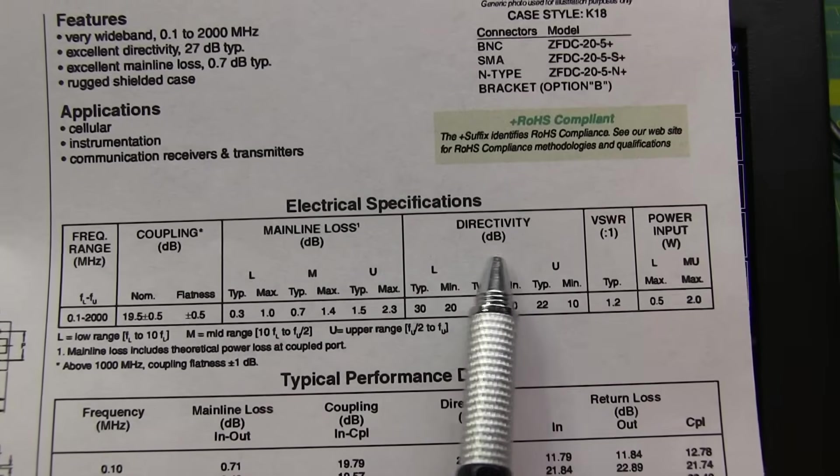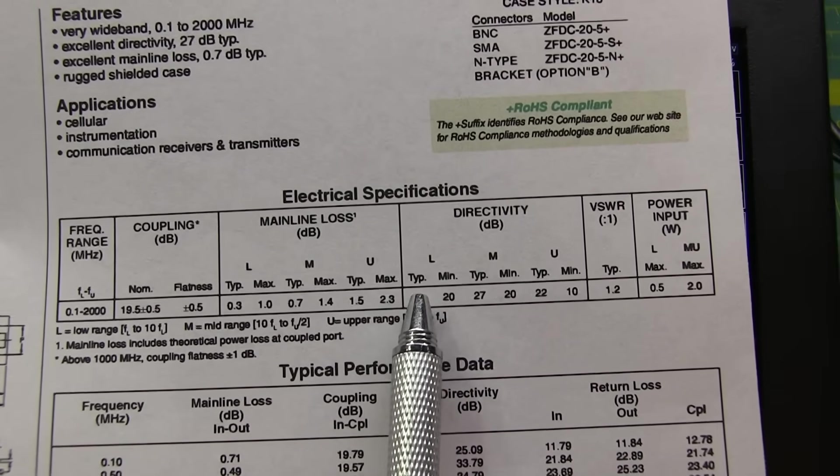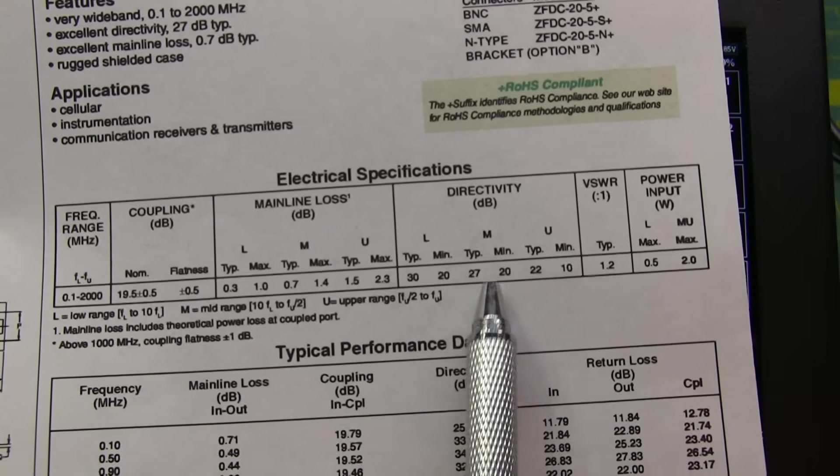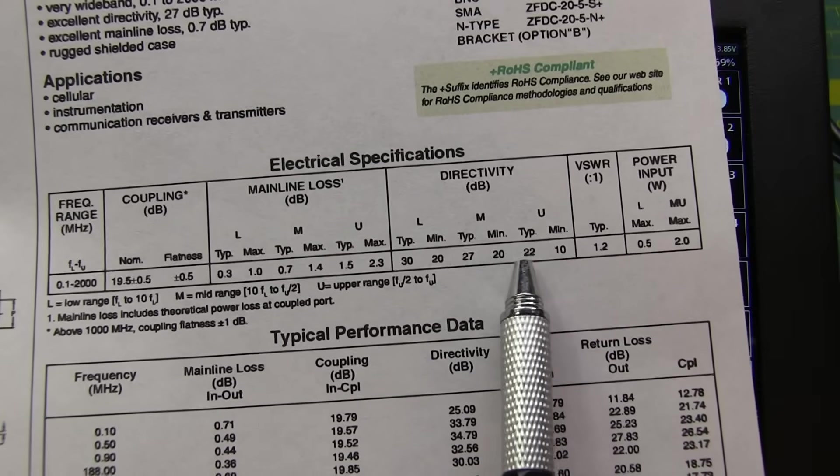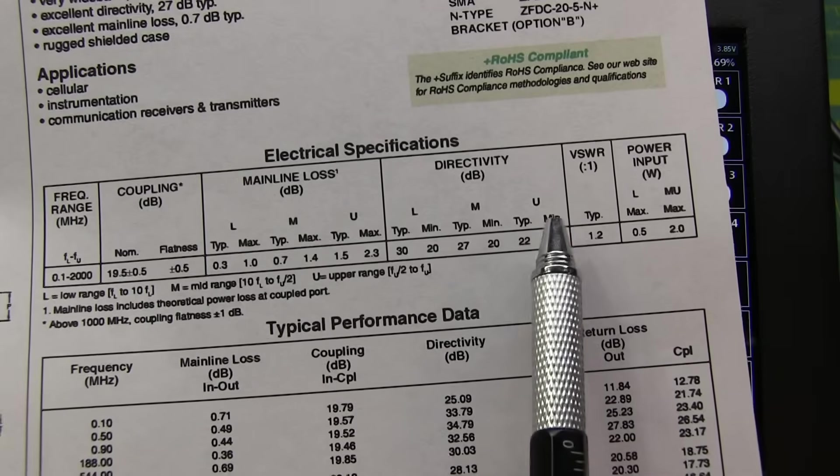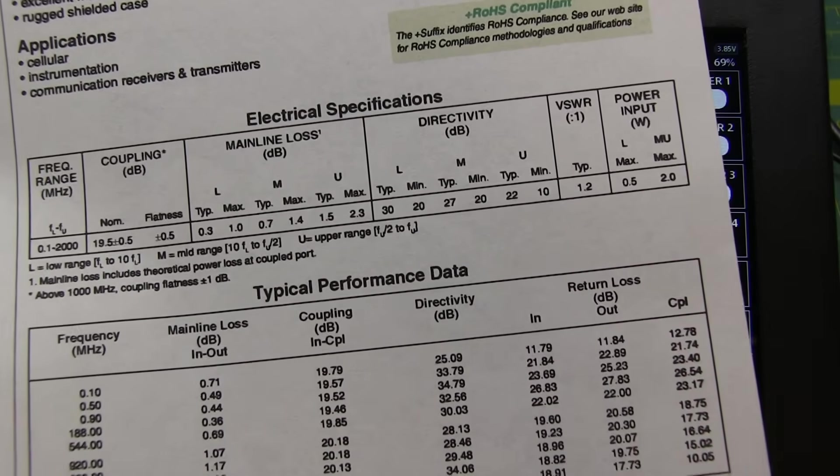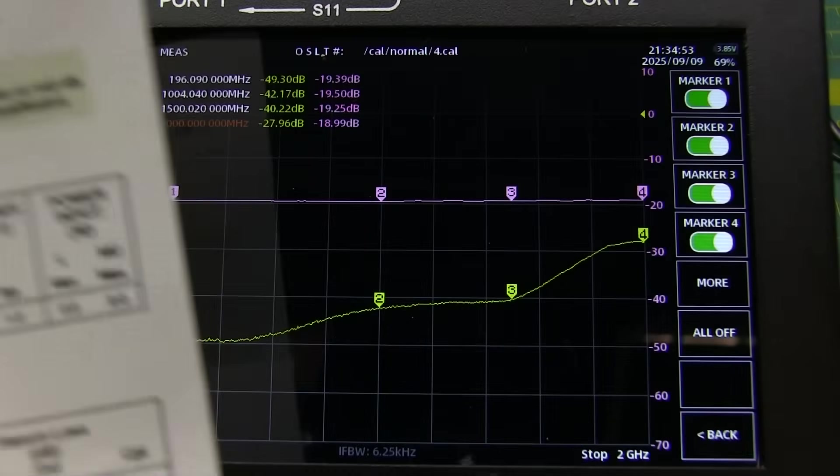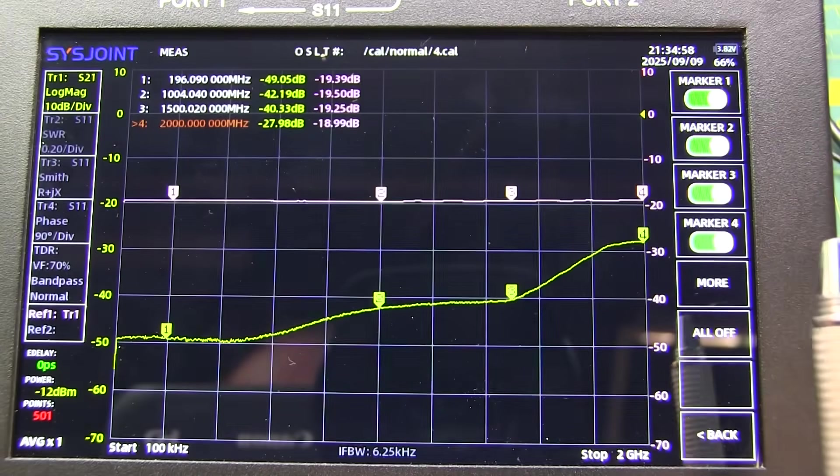And if we look at the specifications for directivity in the low frequency range, again, typically about 30 dB. We're actually starting in our mid-range, about 27 dB. And then you get to the upper range, typically about 22, but the worst case it could be, you know, typical minimum of about 10 dB. I'm measuring about 9. Probably not, you know, too unexpected considering I'm using a bunch of adapters here. But we're reasonably close to the measurements that we have.